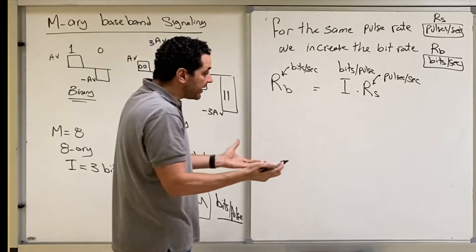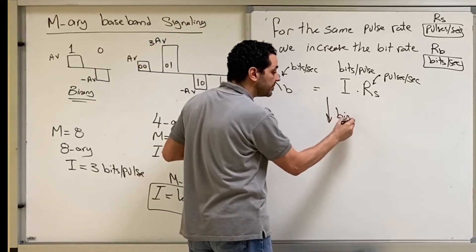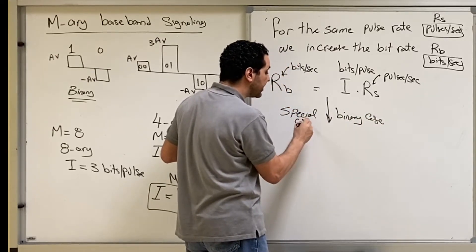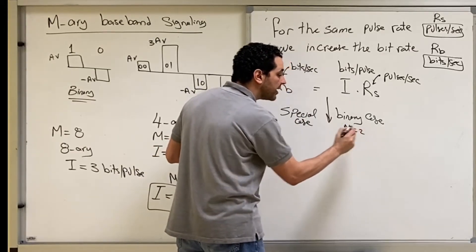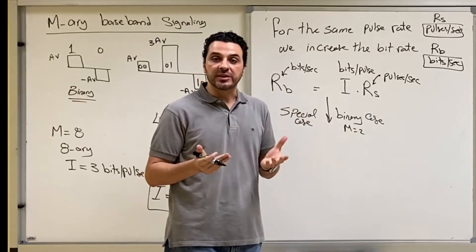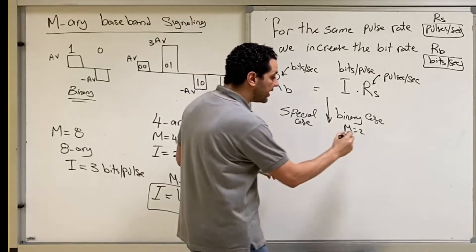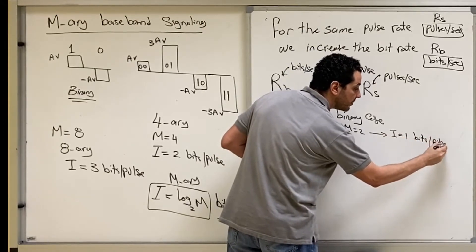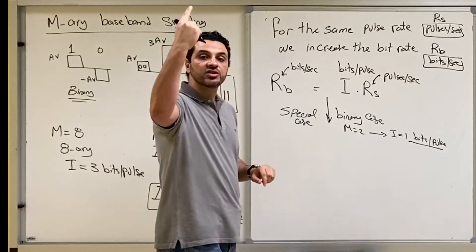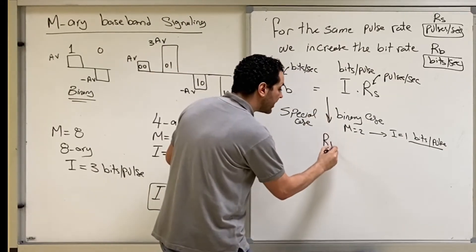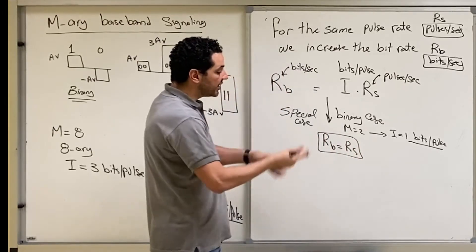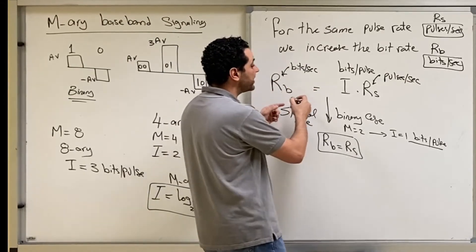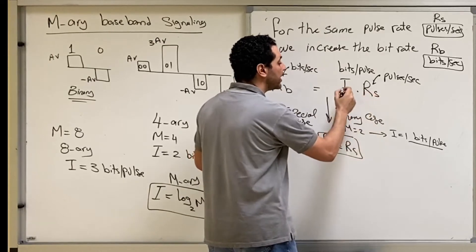As a special case in the binary system, M equals 2, so I equals 1 bit per pulse. Therefore, each pulse carries only one bit, and hence RB equals RS. This is the special case we used to deal with before. But from now on, the general relation is that the bit rate equals the pulse rate multiplied by I.